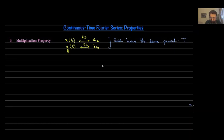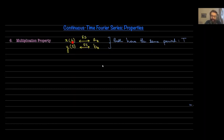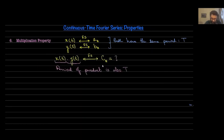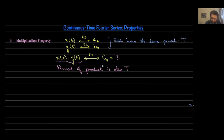The second-to-last property we're going to talk about is the multiplication property of continuous time Fourier series. X(t) is a periodic signal with Fourier series coefficients A_k. Y(t) is another periodic signal with Fourier series coefficients B_k. Both X and Y are assumed to have exactly the same period, capital T. We're interested in finding the Fourier series coefficients of the product X(t) times Y(t).